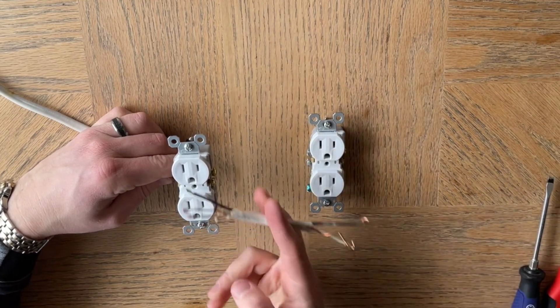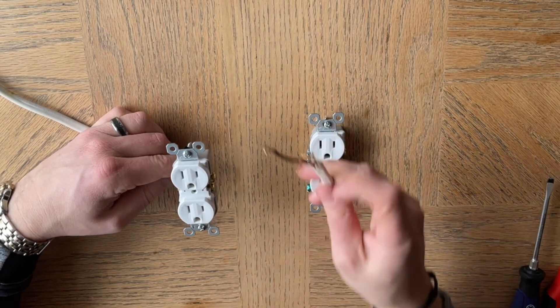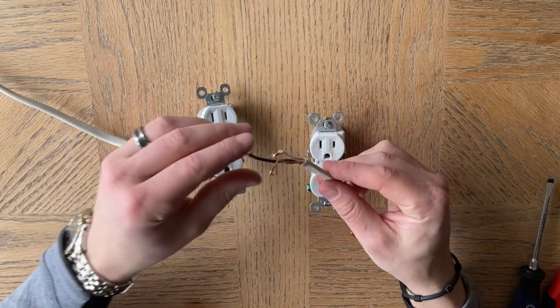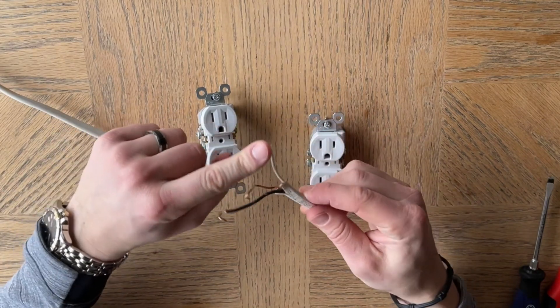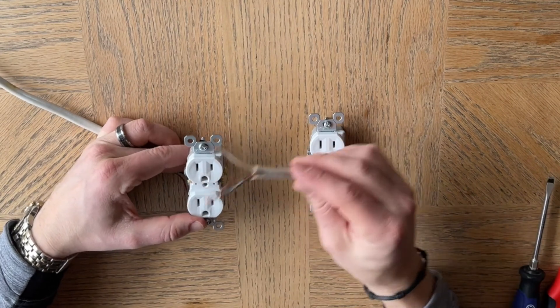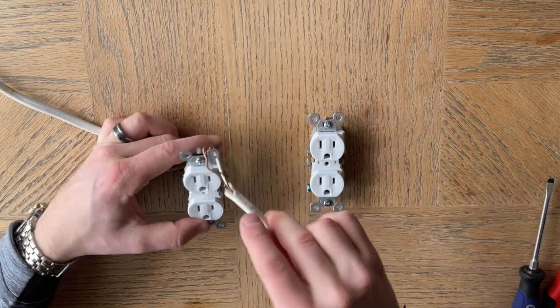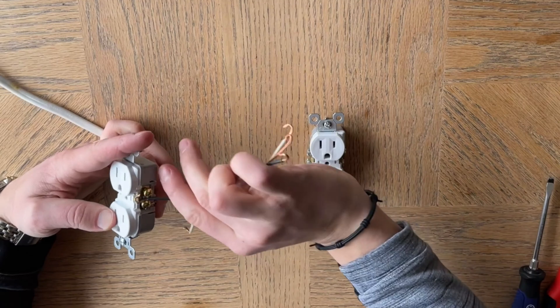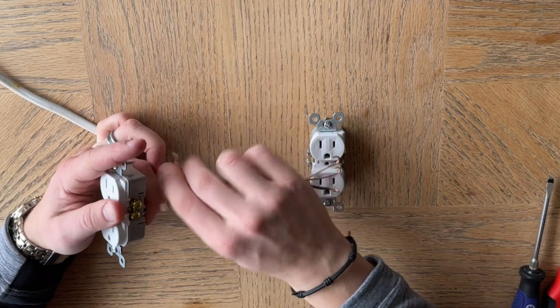So what you're going to do is take the black wire and the white wire and they're going to go on the corresponding terminals here. So the black one is going to go right here on the top. Wire that up, screw it in.